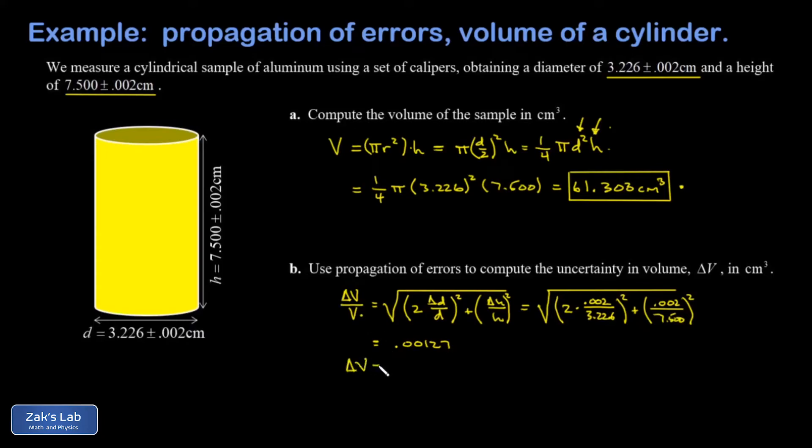So delta V is 0.00127 multiplied by my volume itself, which was 61.303 cubic centimeters. This gives me an uncertainty of 0.078 cubic centimeters.